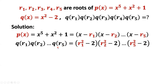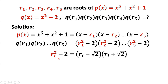This is what we want to find: the product of q(R1) through q(R5). Using the given equation of q(x) with x replaced by R1, R2, through R5, we consider each term R_i squared minus 2, which factors as a product of two terms: R_i minus square root of two, times R_i plus square root of two.